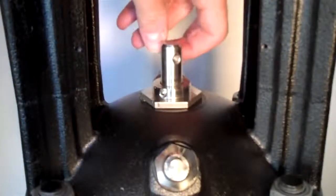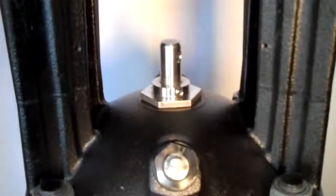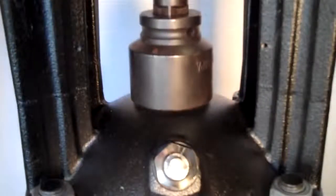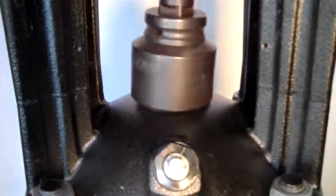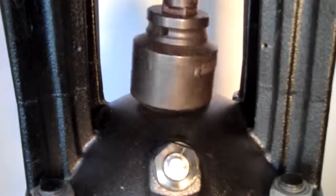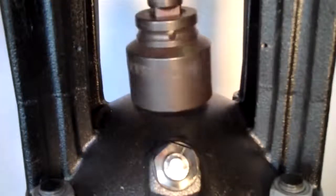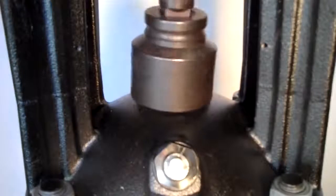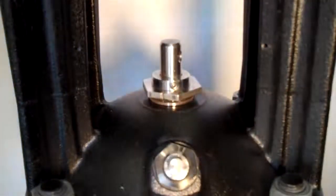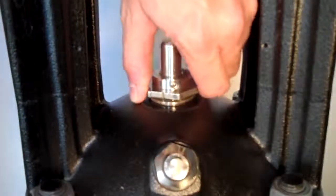With the set screws loosened, we'll use a 41 millimeter socket to loosen the shaft seal. When it's been loosened enough, just pull it straight up off of the shaft.